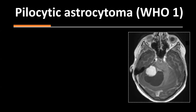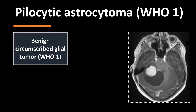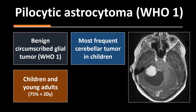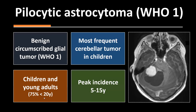These findings — a tumor in the cerebellum in a child consisting of an enhancing nodule and a cyst — are basically pathognomonic for pilocytic astrocytoma. Pilocytic astrocytoma is the most frequent glioma in children and a very benign, WHO grade 1 circumscribed glial tumor, meaning it does not infiltrate the surrounding brain parenchyma. If the surgeon manages complete resection, the patient is likely cured. It is also the most frequent cerebellar tumor in children, with 75% found in patients under 20 years, and a peak incidence between 5 and 15 years.